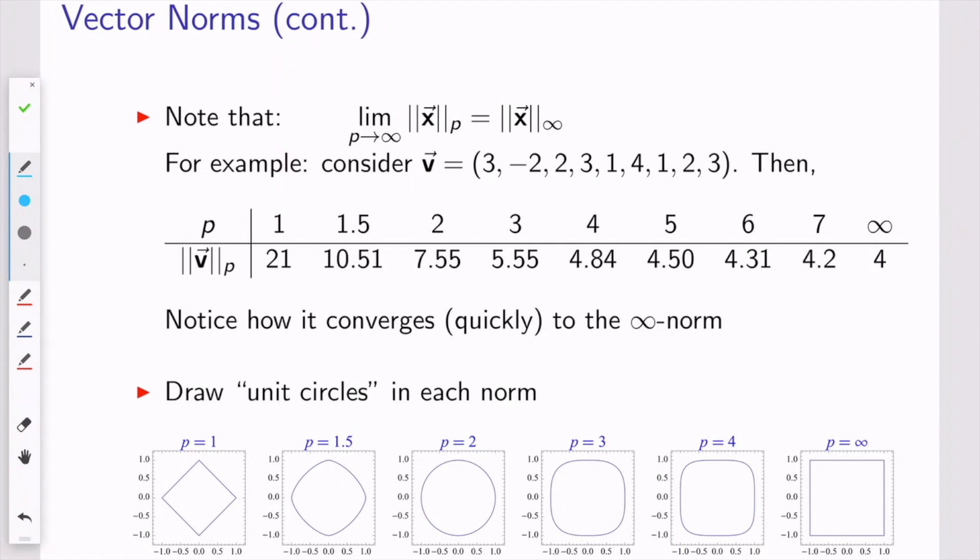I think it's fascinating to look at a fixed vector and look at the norm as you change p. Here's an example. Taking this vector, we can take different p-norms as p goes from 1 to infinity, and what you actually see is the values of the norm converging to the infinity norm. So they make a nice little converging sequence.